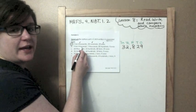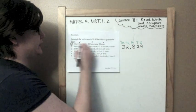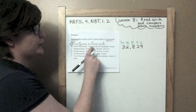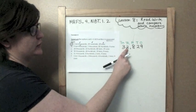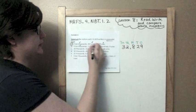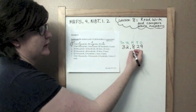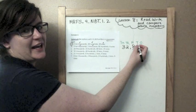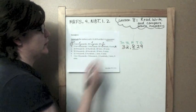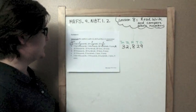Three ten thousands. We already did that. Two thousands. Two thousands. Eighty-two hundreds. Eighty-two tens. Eighty tens. That makes this one wrong.